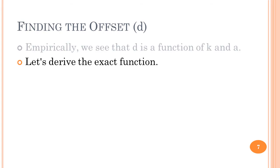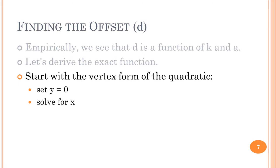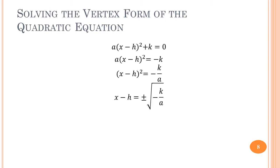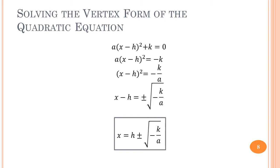Let's derive the exact formula for d. We start with the vertex form of the quadratic equation and set it equal to zero. We move k to the right side, then move a to the right side. Taking the square root of both sides, we get plus or minus the square root of negative k over a. Finally, moving h to the right side, we have x equals h plus or minus the square root of negative k over a. So d is the square root of negative k over a.